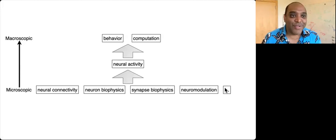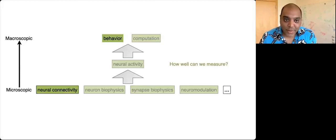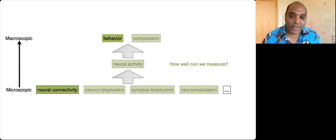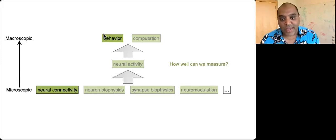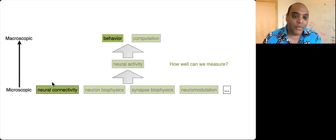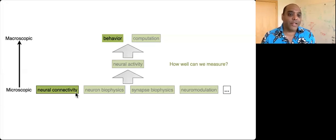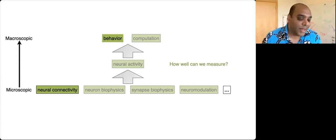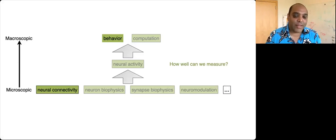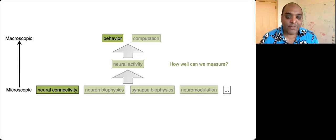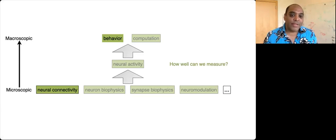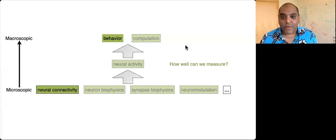In terms of how well we can measure each of these things, it used to be that the main things you could measure were neural activity and behavior. But now for the first time we have very comprehensive measurements of neural connectivity — something we've never had before in the history of neuroscience. We had it for C. elegans, this tiny worm with 300 neurons, back in the eighties. But now for a much larger species we have this comprehensive connectivity. The question is: how can we use this new information to make sense of how the brain works?